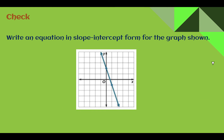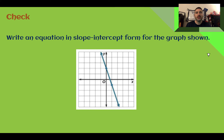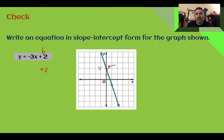Check your understanding: write an equation in slope-intercept form for the graph. You should have said y equals negative three x plus two. The y-intercept is two spaces up on the y-axis — that's plus two, our b value. The ratio for rise to run: we go down three units over one, which is negative three. That's our m. So y equals negative three x plus two.